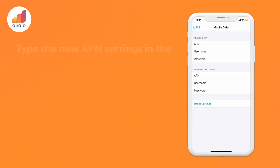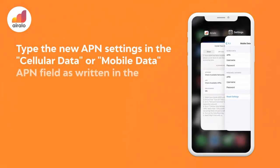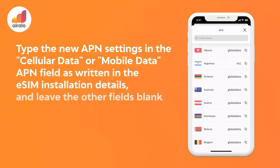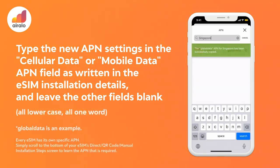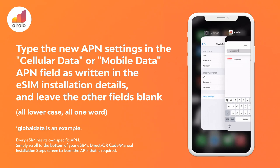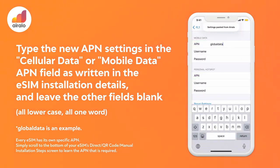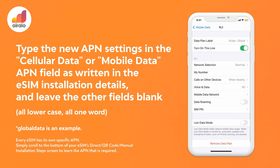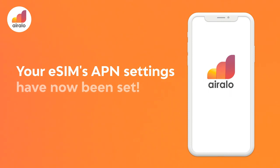5. Type the new APN settings in the Cellular Data or Mobile Data APN field as written in the eSIM installation details, and leave the other fields blank. Your eSIM's APN settings have now been set.